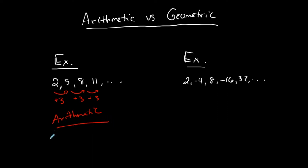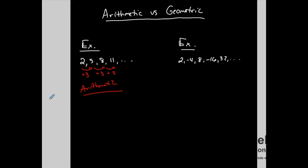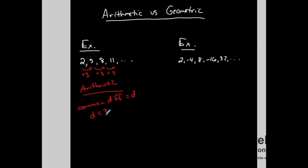That number that you're adding or subtracting — I'll show you an example where you're subtracting — is called the common difference, which we represent by D. So for this particular example, D equals 3. A1 represents the first term, in this case equal to 2. If it's arithmetic, we have a common difference: a number that keeps being added or subtracted to get to the next term.